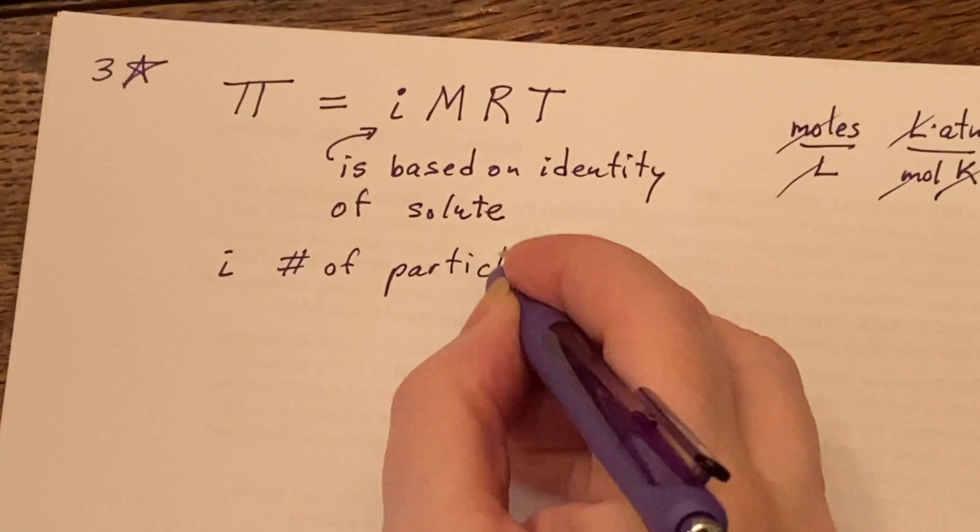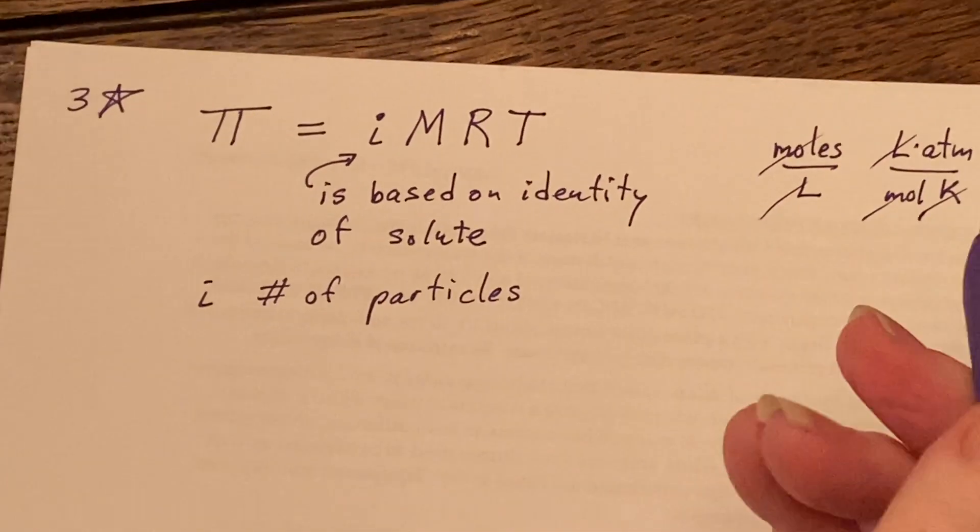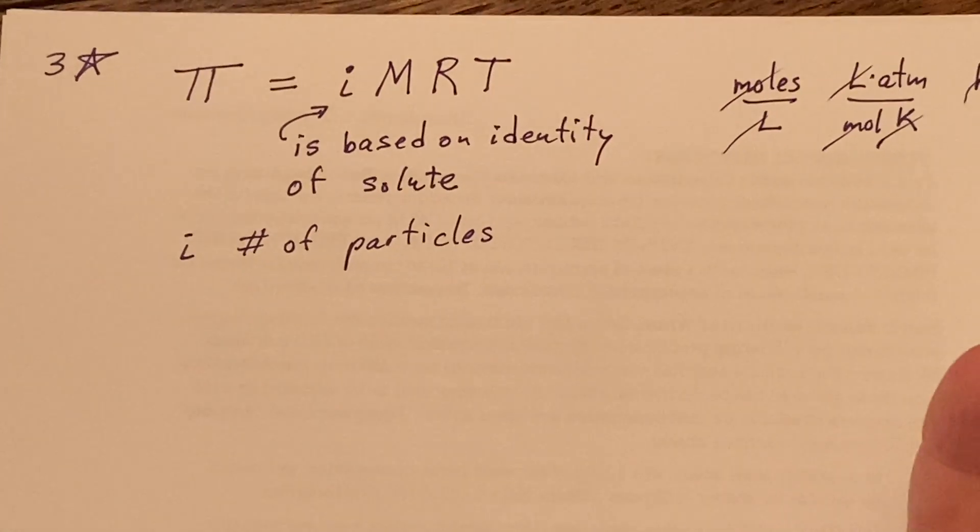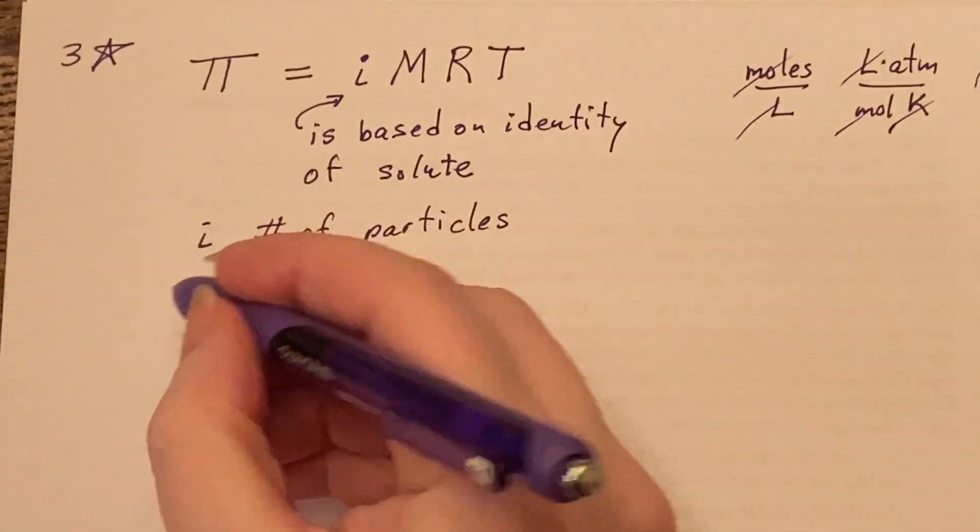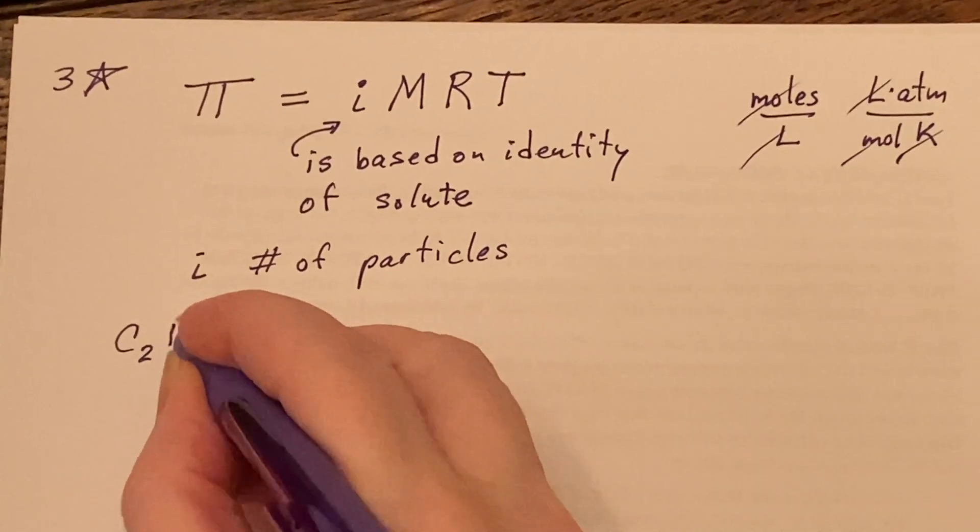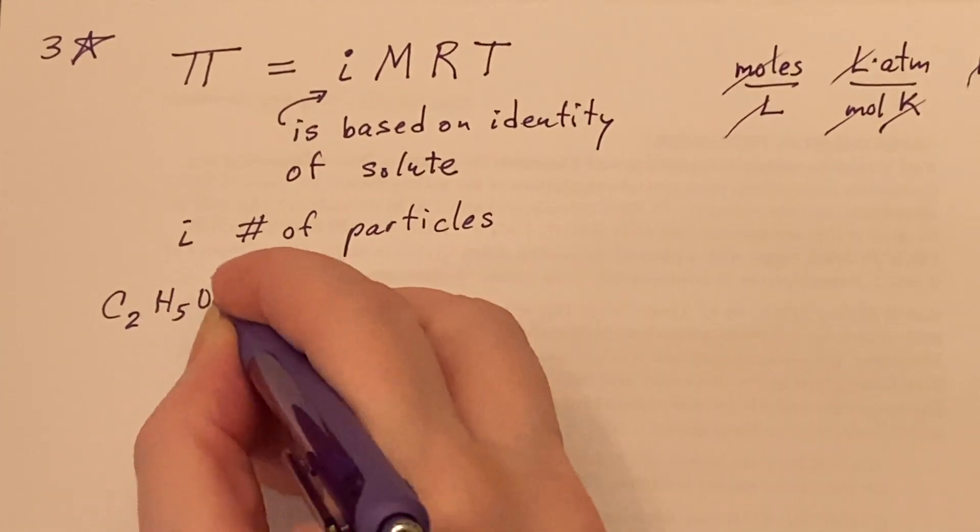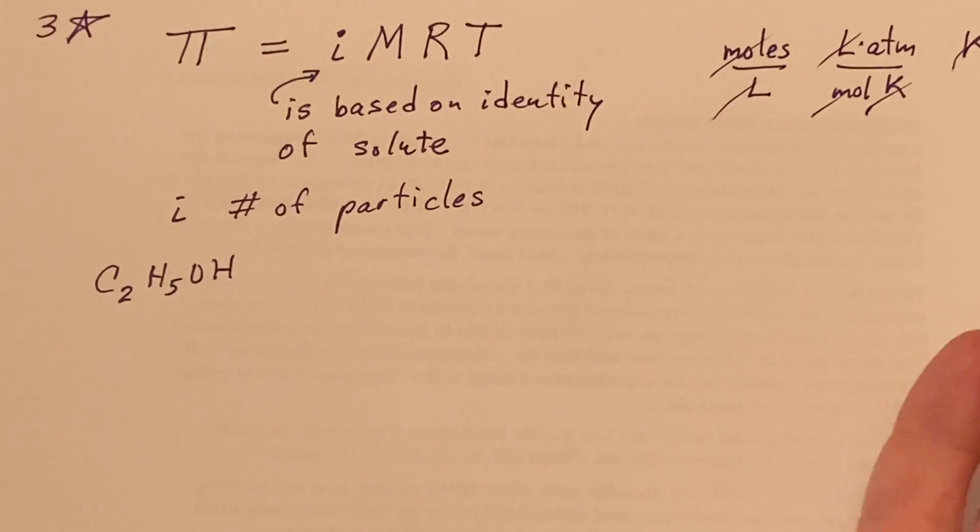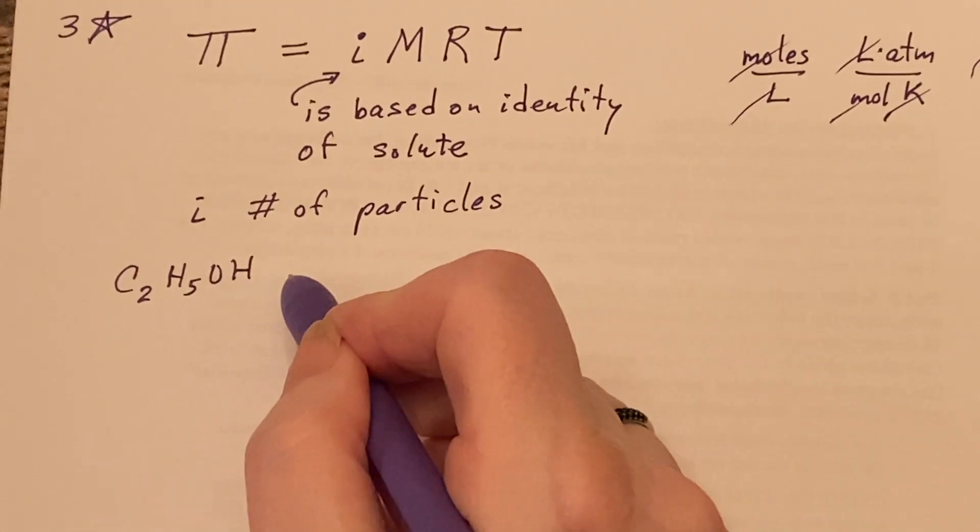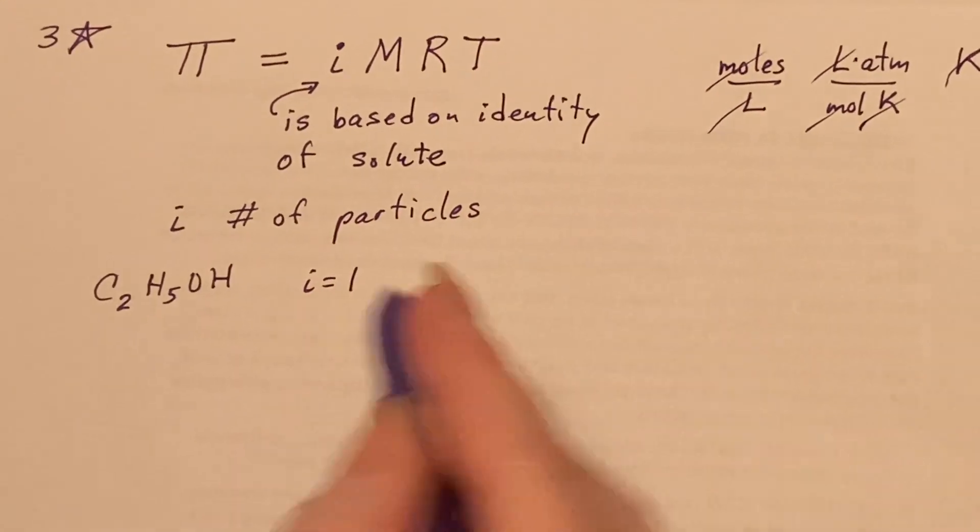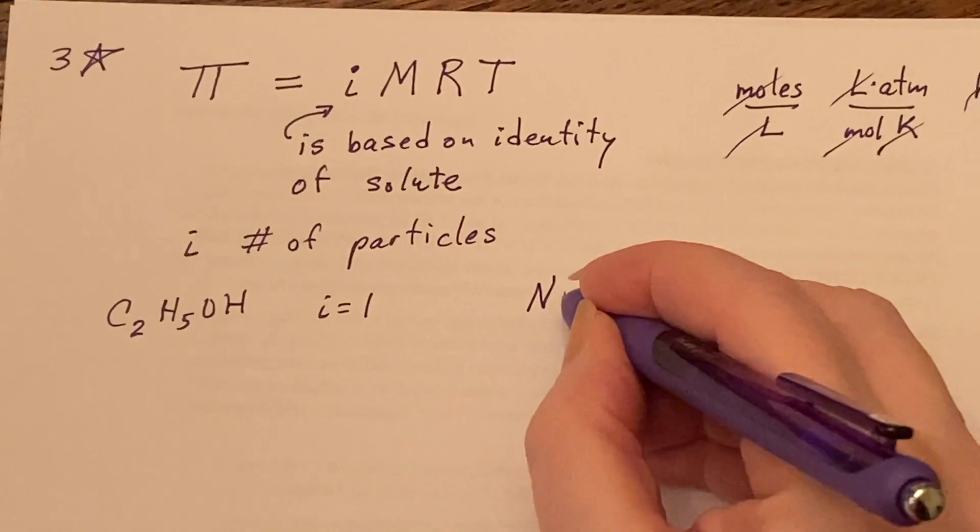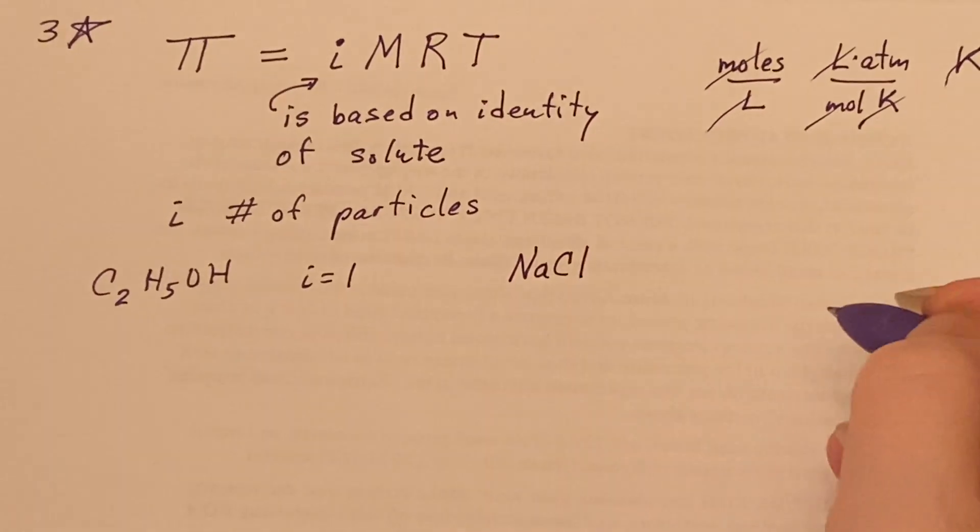i is going to be telling us about the number of particles, because when some things dissolve they come apart, some things don't come apart. What am I talking about? Well, think about ethanol. First of all, if we have ethanol, it does not fall apart—it creates just one particle, and i will be one for ethanol.